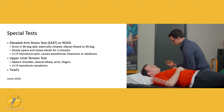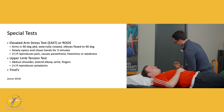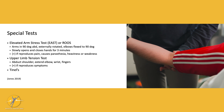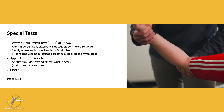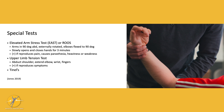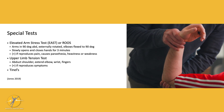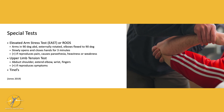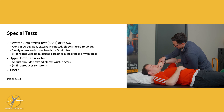For the ulnar nerve, we will bias it with ulnar nerve tension testing. Have the patient depress their scapula a little bit, then pronate the arm and bend it up toward their head.